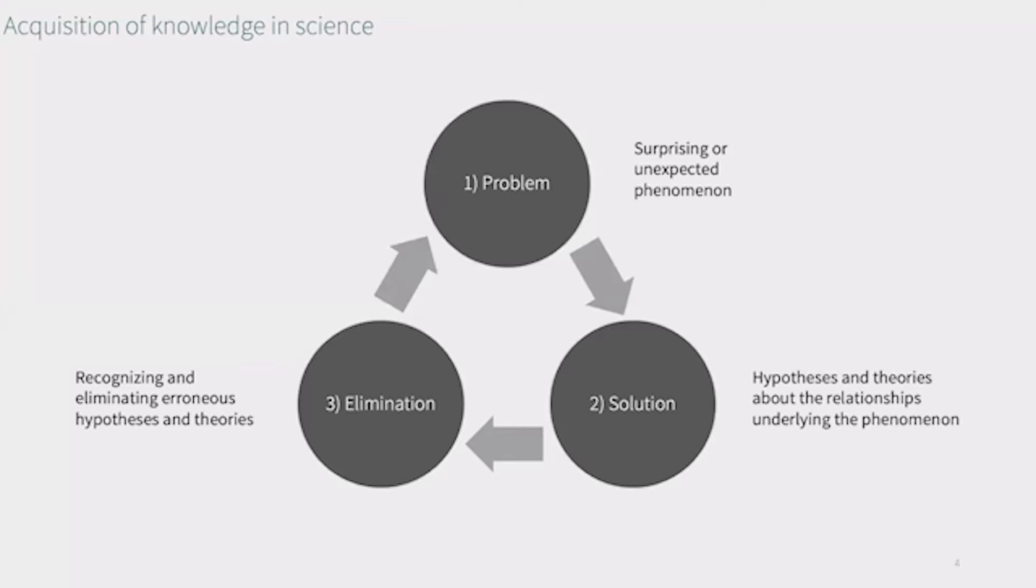In science, the process along which knowledge is acquired usually follows a specific schema. Normally we will start with a real-world problem or phenomenon that we observe that is unexpected and surprising. On a quest to find explanations for the phenomenon, we develop hypotheses and theories that conjecture about the relationships underlying the phenomenon.